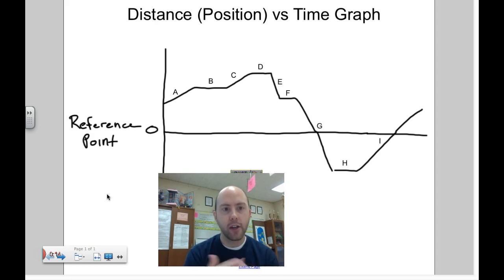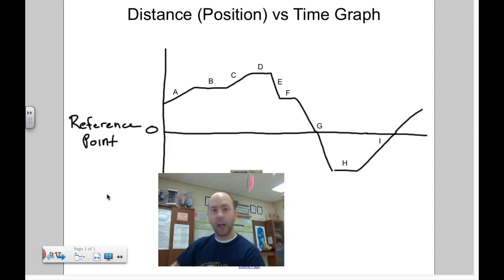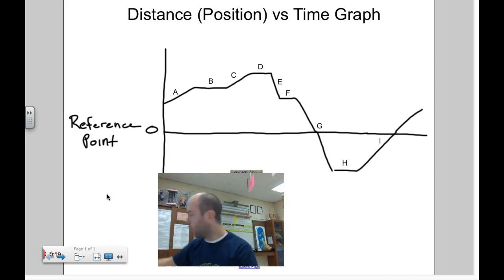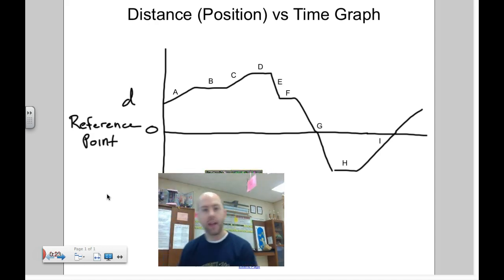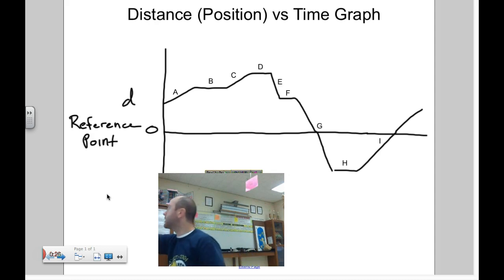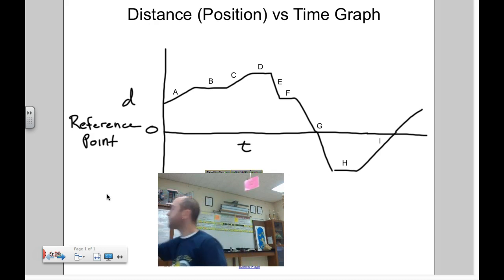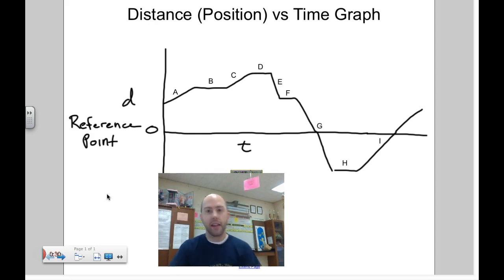We have a graph — I didn't label it, which is my bad — but along the y, which is the vertical, we have our distance, which I'll put as d. And then along the x, we have time, t. And then I have various different slopes.